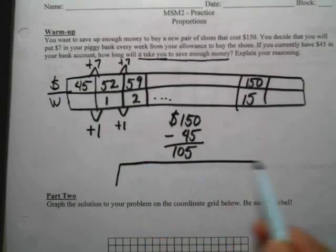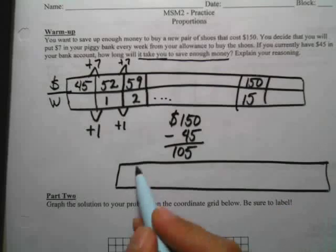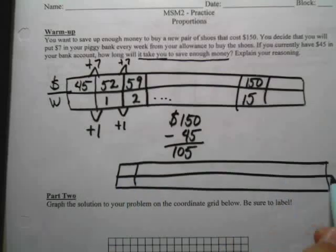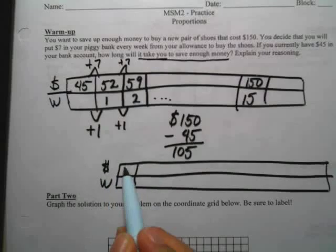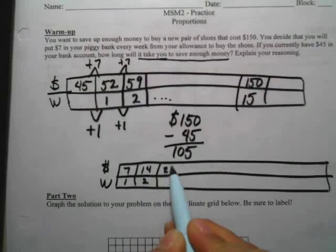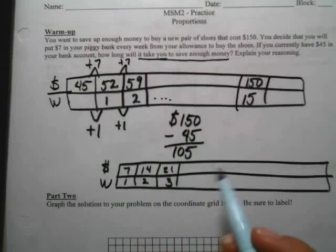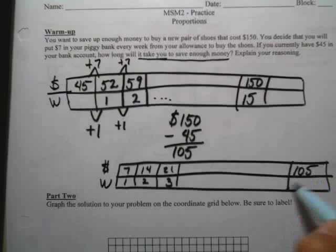If I set up a ratio table that way, it's a little bit easier. Because I can start with money here again and weeks here again. I'm going to save $7 every week. And that's going to be a little bit easier. But I know that I have to get to this $105 at the end, in my end column. And that's going to, if I keep working it out, it's going to take me 15 weeks.